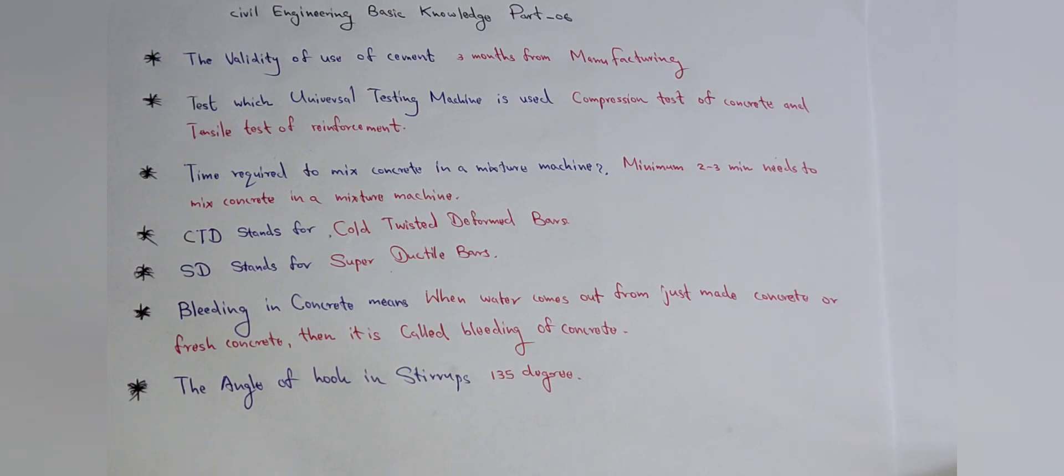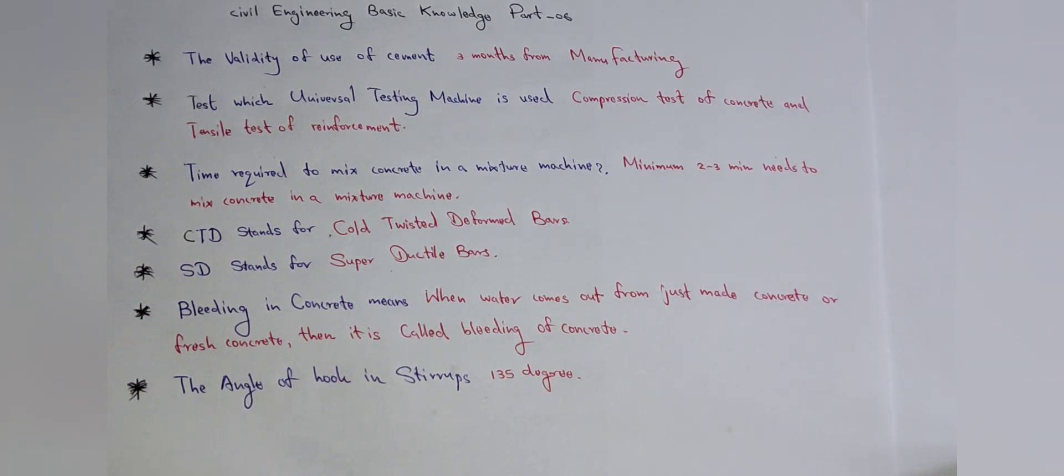It's okay, doesn't matter. The flow doesn't matter, even if part 7 came first before part 6. Now we'll go through this. The first thing is the validity of use of cement. Normally cement you can use, there's a validity period of nearly three months from the manufacturing.